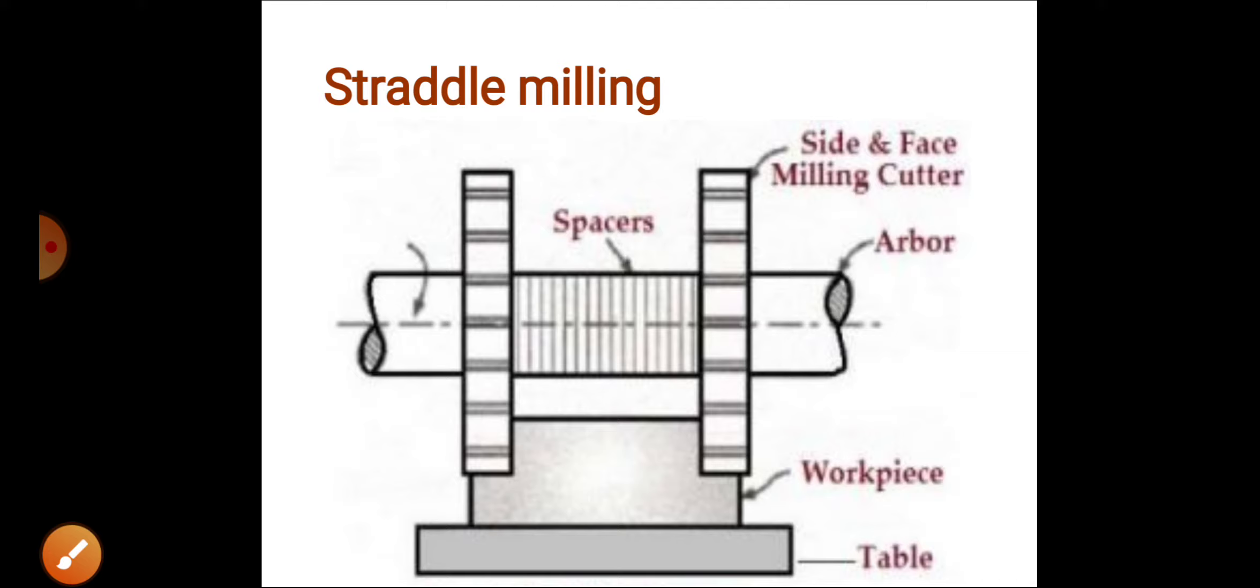Next type is to cut a hexagonal surface. If two parallel faces are needed to obtain a hexagon, then straddle milling is used. There will always be two cutters.